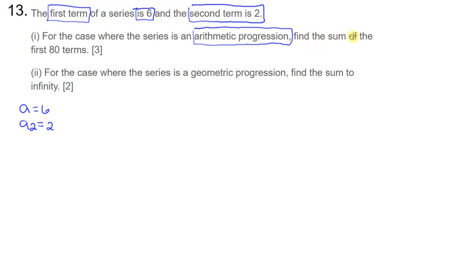So it's arithmetic progression and they want us to find the sum of the first 80 terms. We've got a formula for that. We don't know the last term, so we're going to go ahead and use the formula that looks like this: 1 half N and then 2A plus N minus 1 all times D and then we're closing that up.